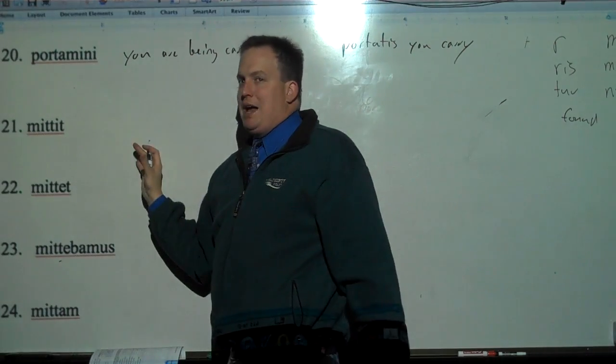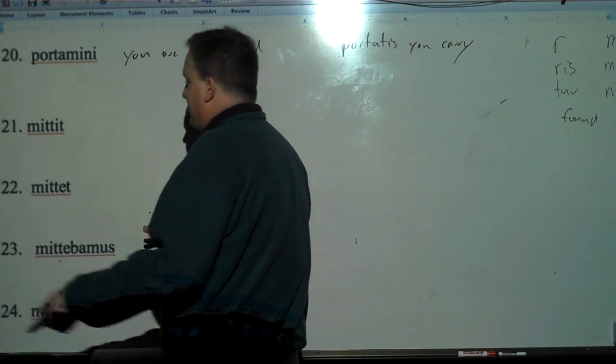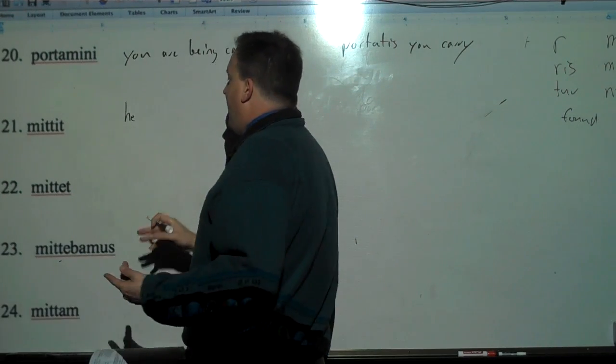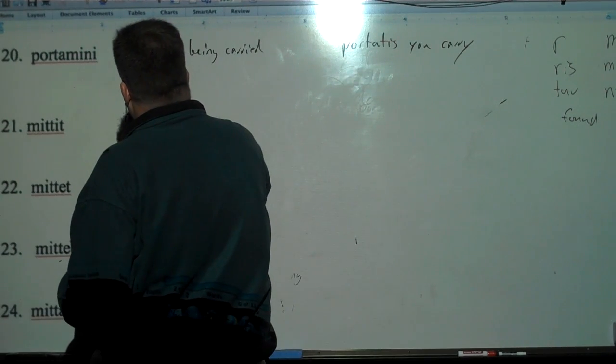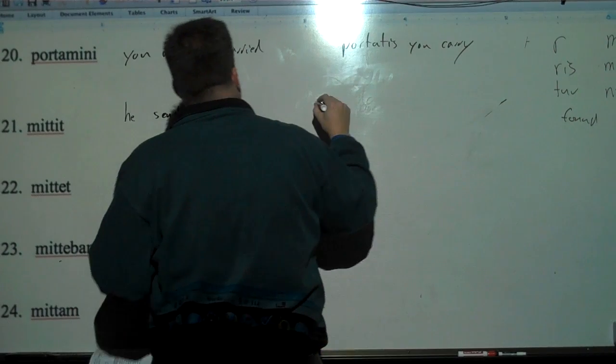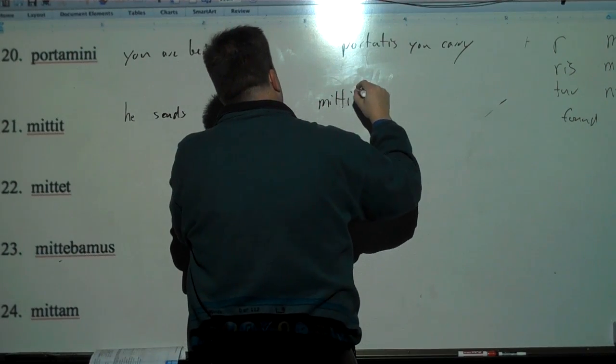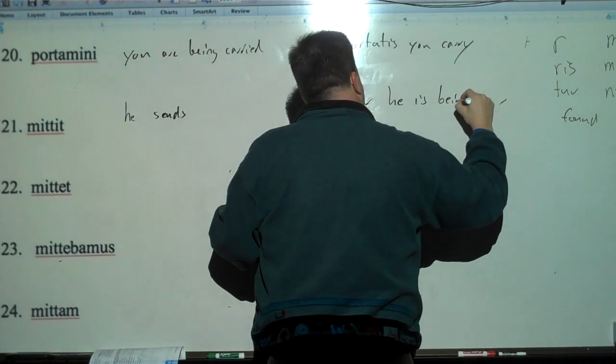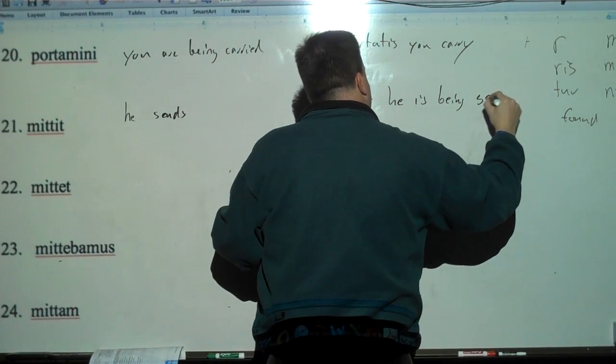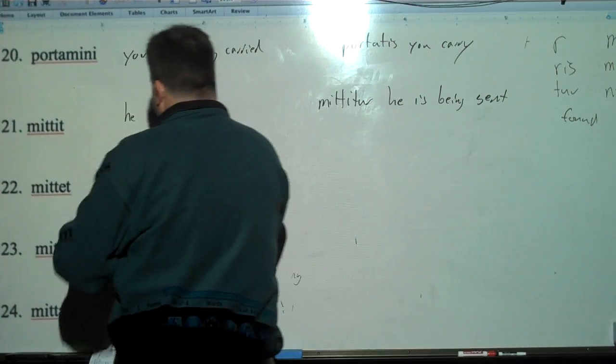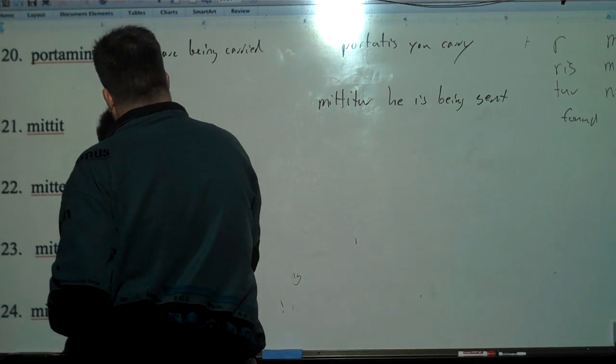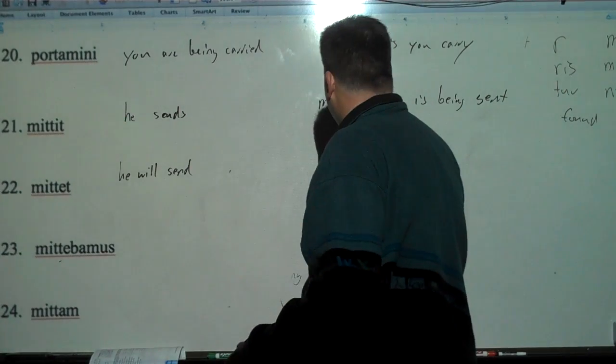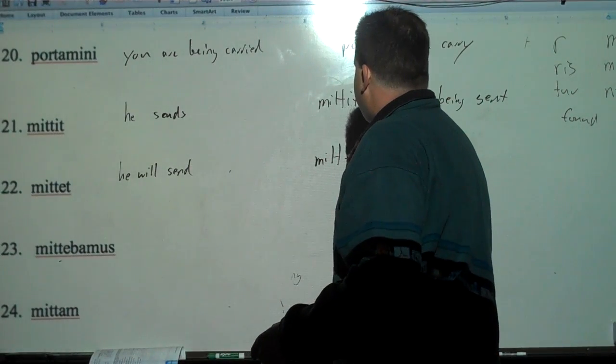This is where I mess up. This should be passive, but it's active, so let's go with the active here. Mittit is third, has an I, so it's present. He sends. And then we make it mittitur. He is being sent. Mittet, he will send, because it's E, because it's future. And then mittitur, he will be sent.